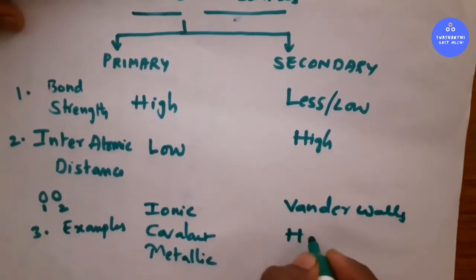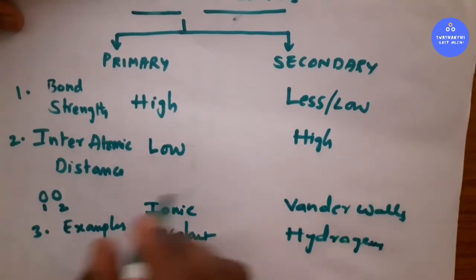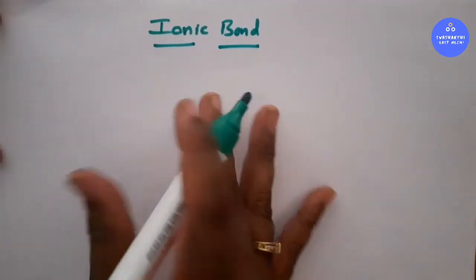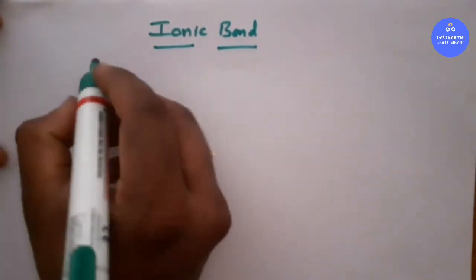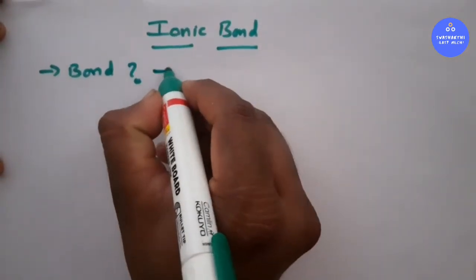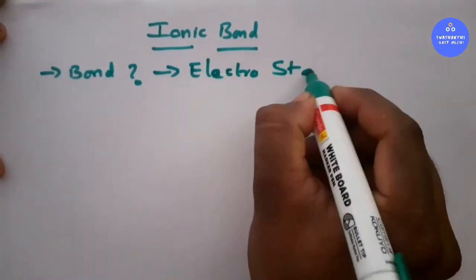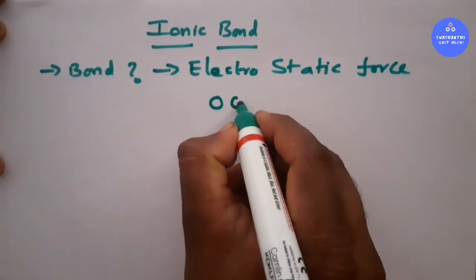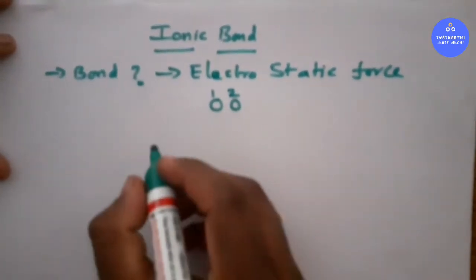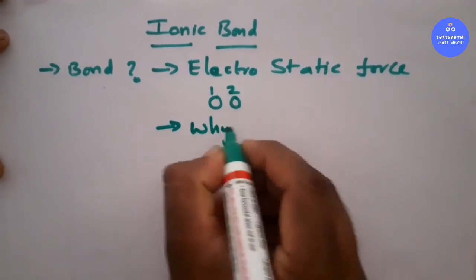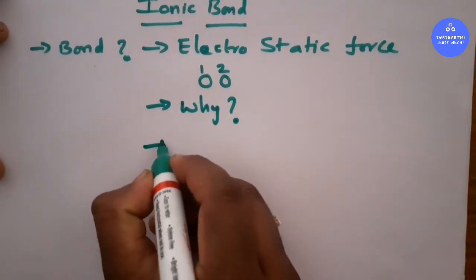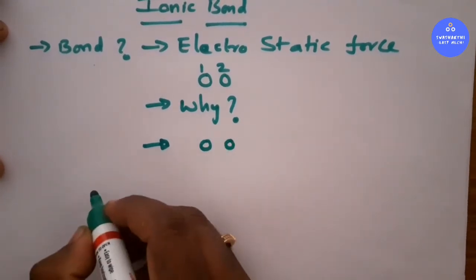Now let us see about ionic bond and how it forms. First of all, what is a bond? A bond is formed due to electrostatic force. There is an electrostatic force that exists between two atoms, and that electrostatic force is called a bond.